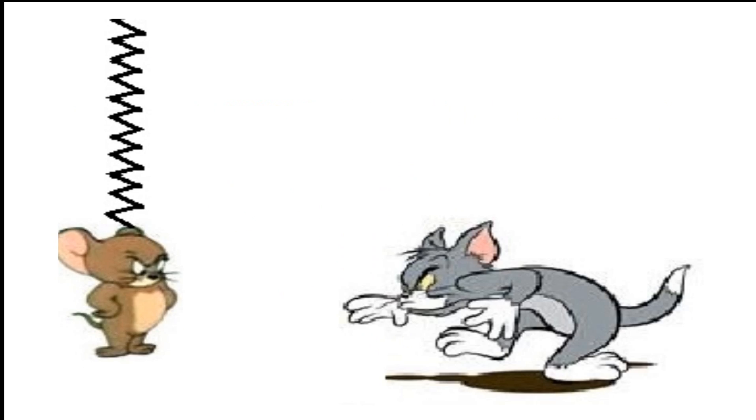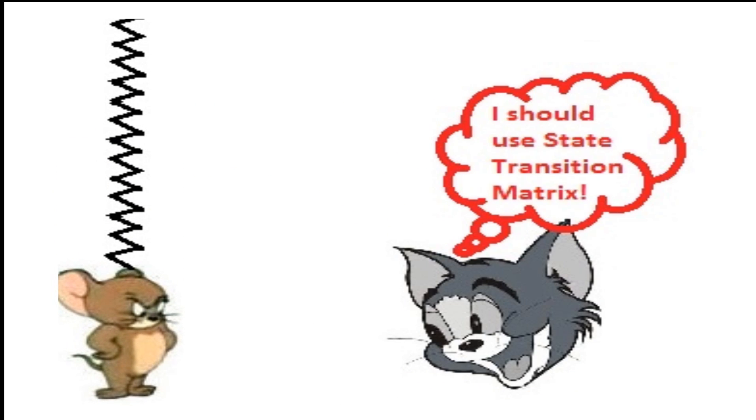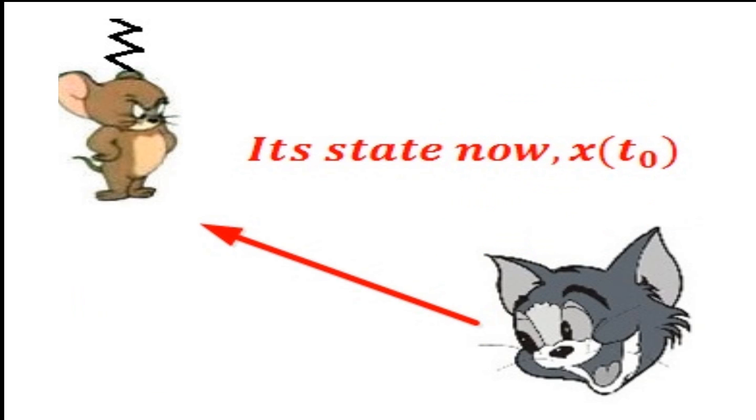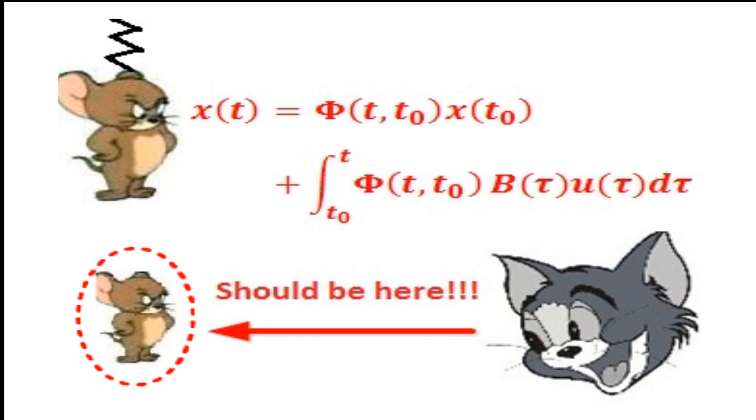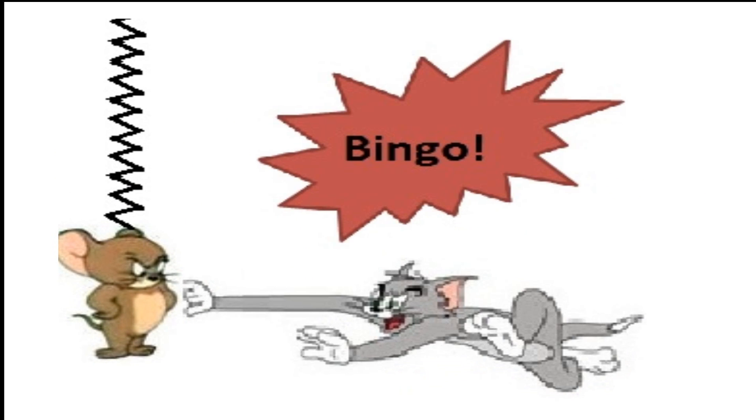Now, let's see the difference. So, if Tom has learned how to use state transition matrix, then when he sees the state of Jerry, he will know where Jerry will be after time t. And then, he can easily catch Jerry.